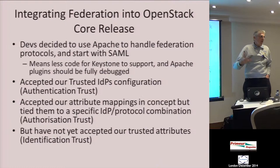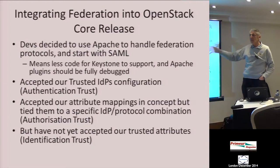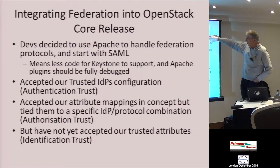Because OpenStack is changing so rapidly every six months, we can't keep modifying our code in a one-year research project — there's no longevity, no ongoing support and maintenance. We wanted to get into the core release so we could forget about it, because once it's in core release, people like Red Hat and IBM will support the code for us from then onwards.